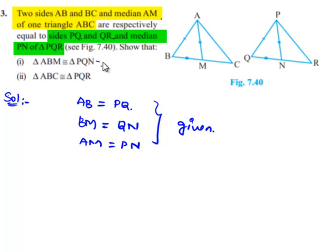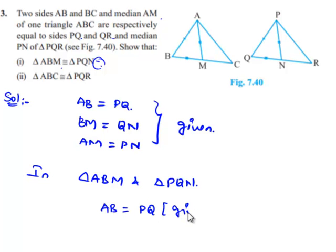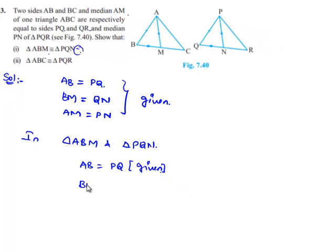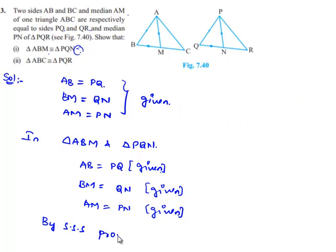Now, to prove the congruency of triangle ABM and triangle PQN, let us consider both triangles. In triangle ABM and triangle PQN: AB is equal to PQ (given), BM is equal to QN (given), and AM is equal to PN (given). Therefore, by the SSS property, triangle ABM is congruent to triangle PQN.